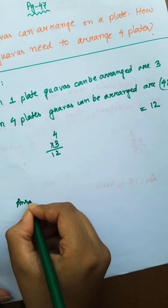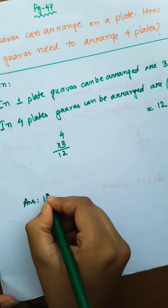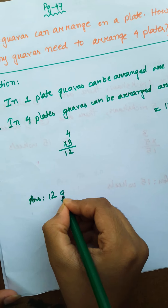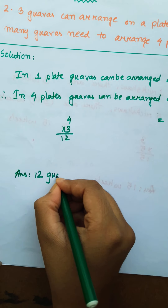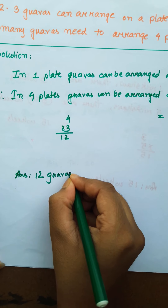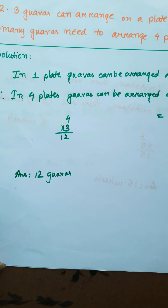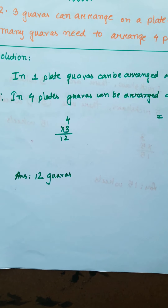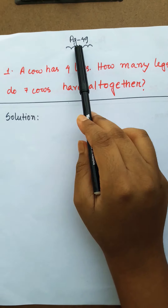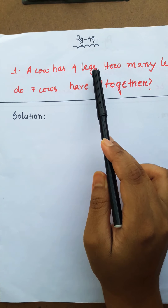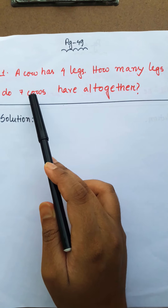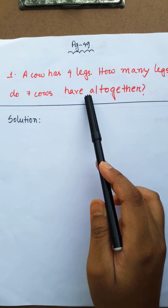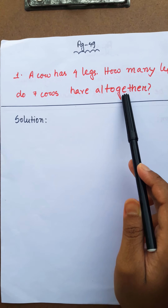So the answer is 12 guavas. Now the next math, page number 14, question 1: A cow has 4 legs. How many legs do 7 cows have altogether?